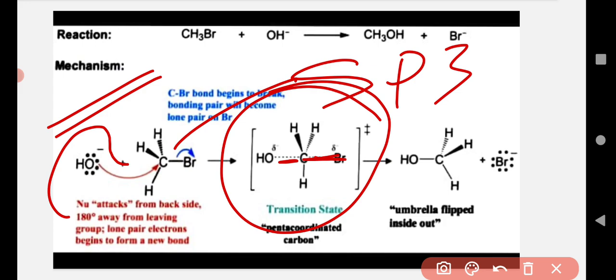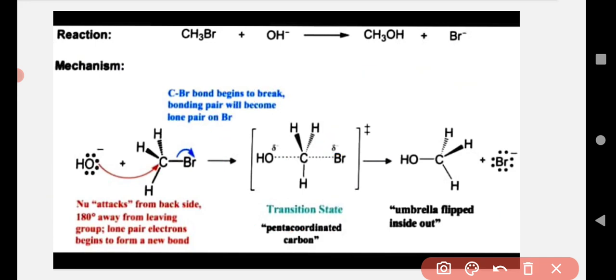After the transition state, the Br minus ion is released or leaves the carbon atom and a new compound is formed. We are observing that the stereochemistry of the molecule has been changed. Earlier this kind of molecule was present. After the reaction, this kind of molecule is present. If we make this molecule like a mirror image,